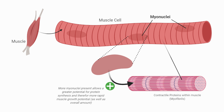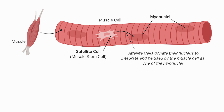Initial muscle size increases are handled effectively by established myonuclei. These are nuclei that line the muscle cells and are responsible for allowing protein synthesis to occur by having their DNA read. The more you have in the cell, the greater the rate of protein synthesis potential. Eventually, testosterone leads to such an accelerated increase in protein synthesis that the muscle cells need more nuclei and recruit satellite cells to integrate into the muscle cells, donating their nuclei.